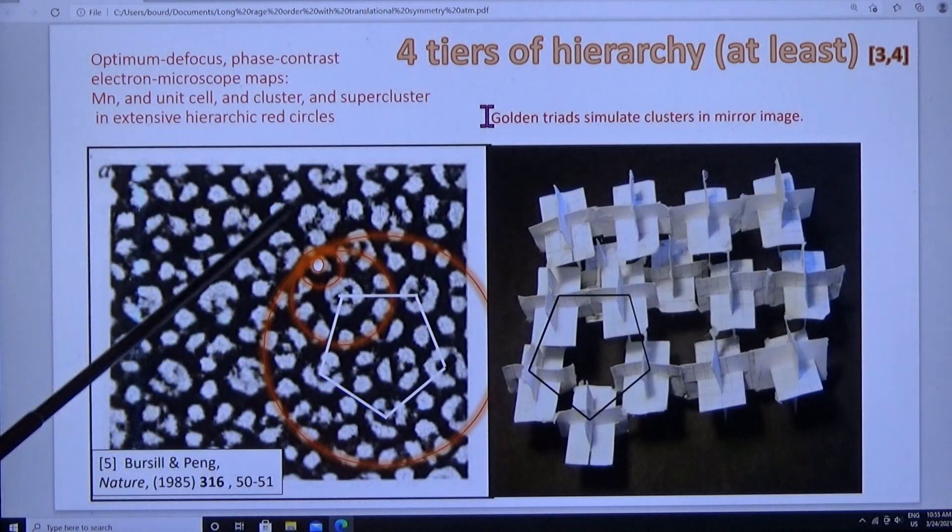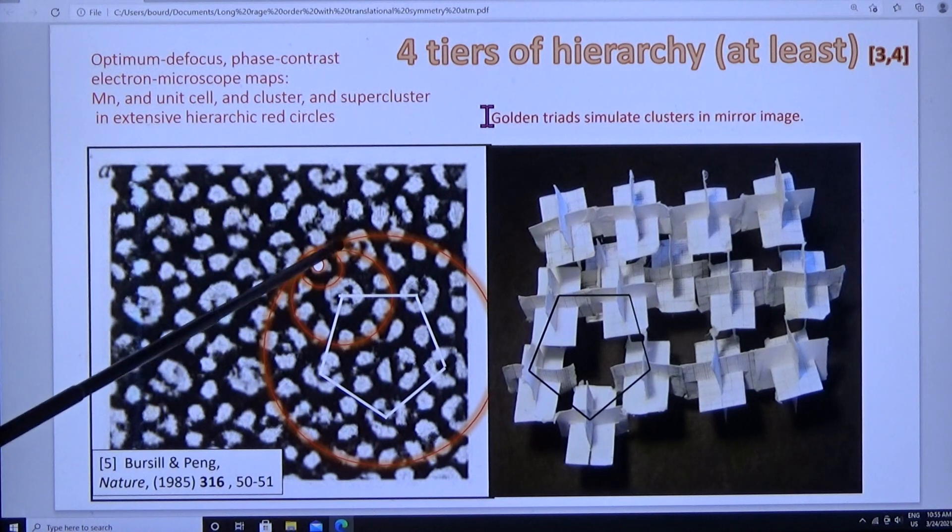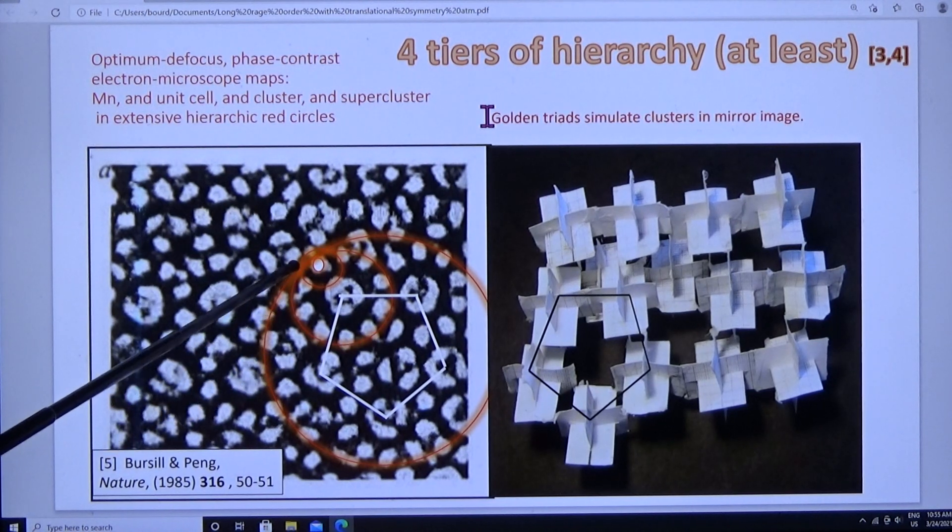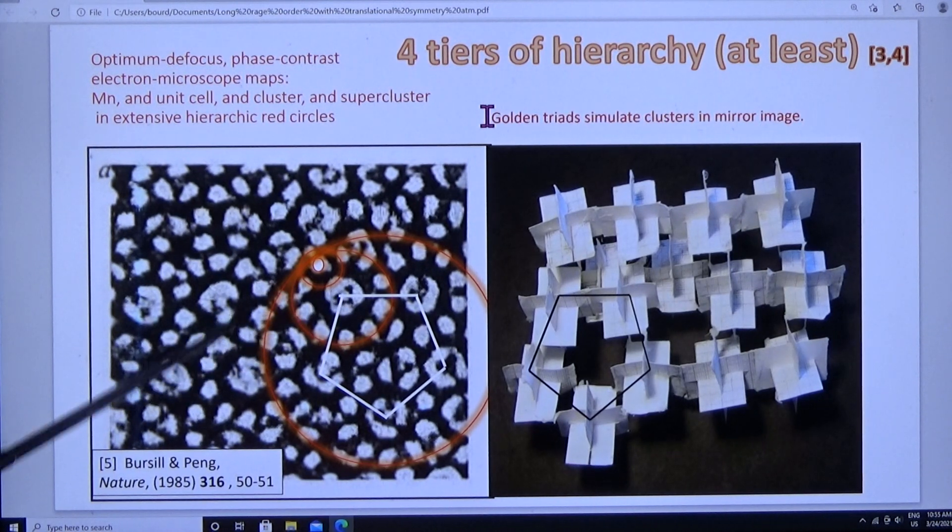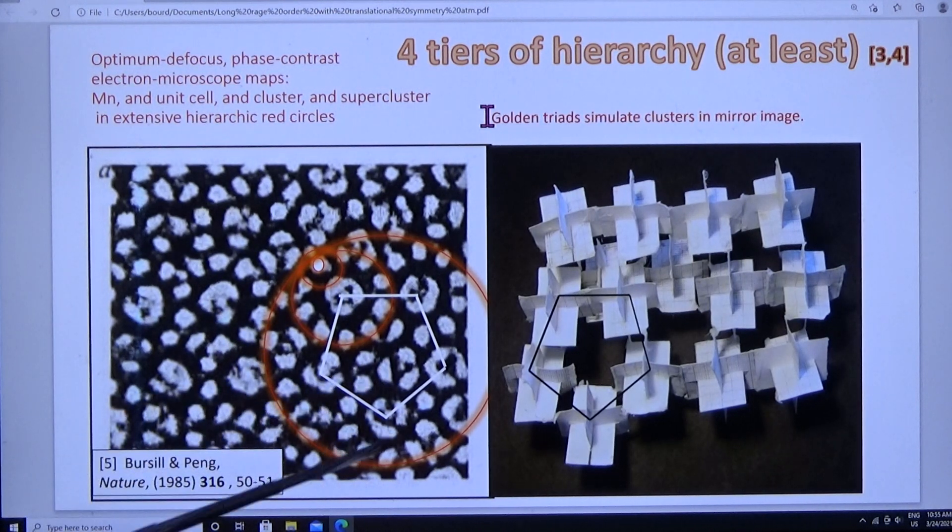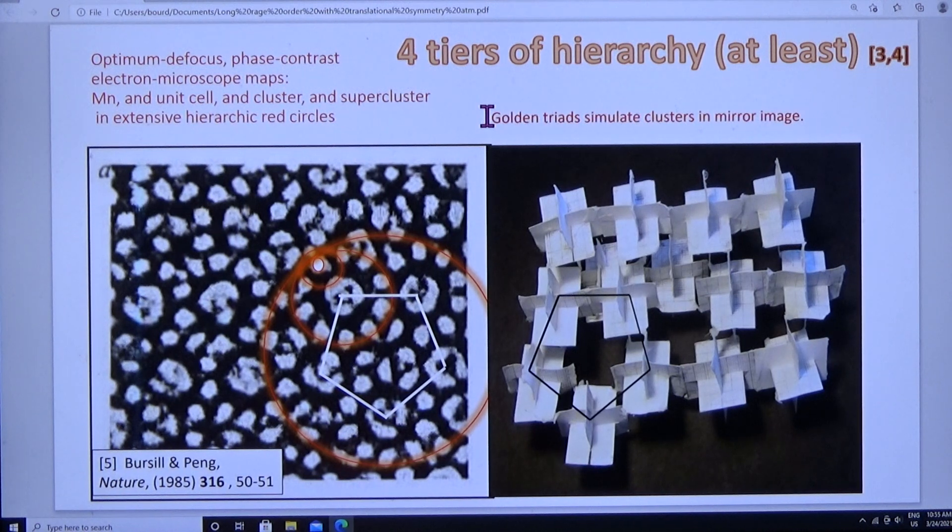Here they are: manganese, the unit cell, the cluster on two circles, and the supercluster with five clusters on one circle because the specimen is sufficiently thin.